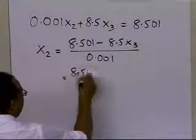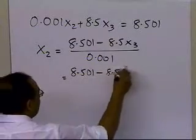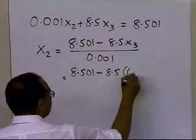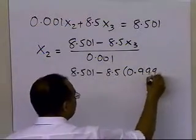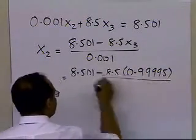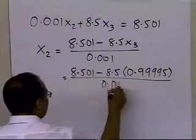So we've got 8.501 minus 8.5 times x3, which is 0.99995, divided by 0.001.